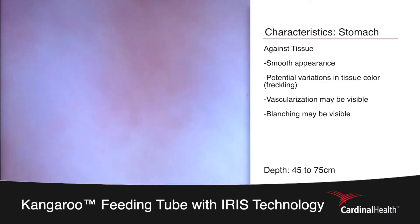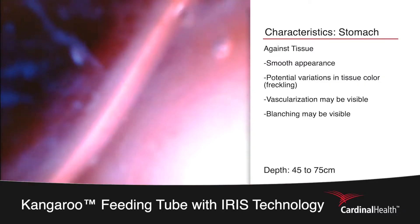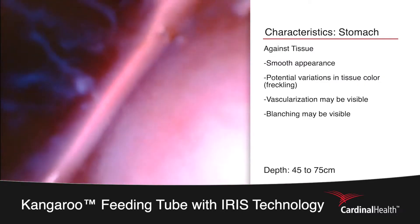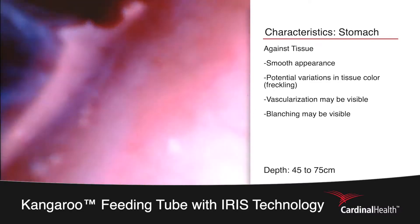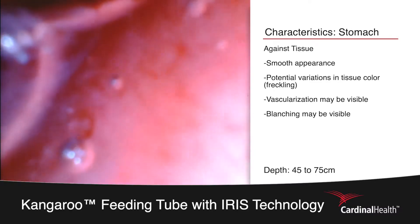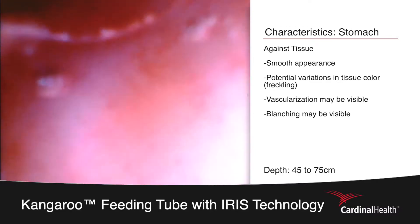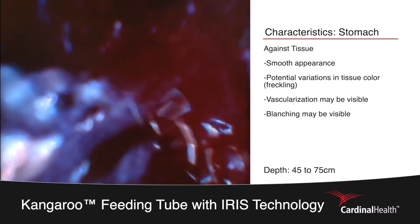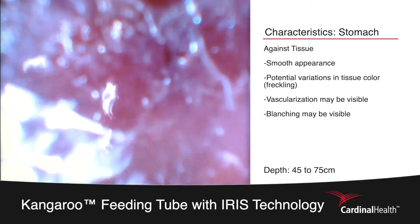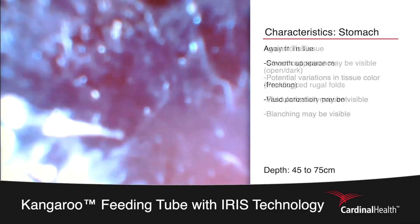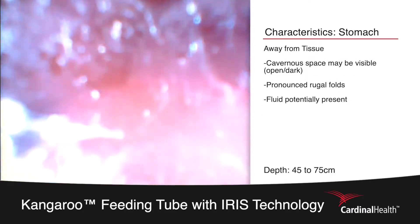Internal anatomy varies in every patient. With this patient, the placer makes multiple attempts at entering into the small bowel, as can be seen by progression and then retraction back towards the top of the stomach.